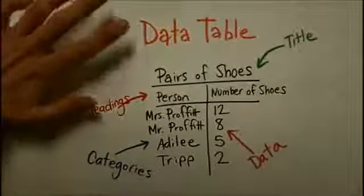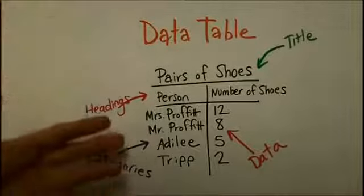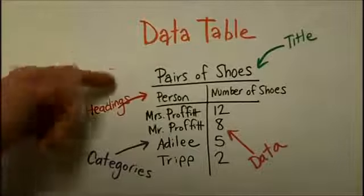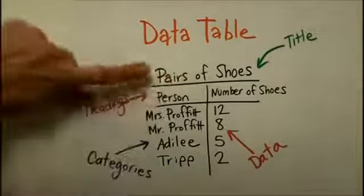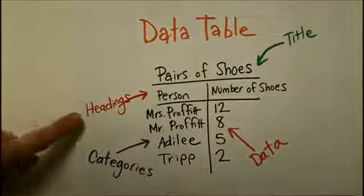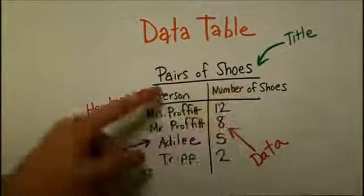When you get ready to make a bar graph, of course, you're going to have a data table. You might collect the data on your own into the data table. And here's one that I created in my own house. A data table has a title so that whoever's reading your data can tell what your table is about. It has headings on both columns.